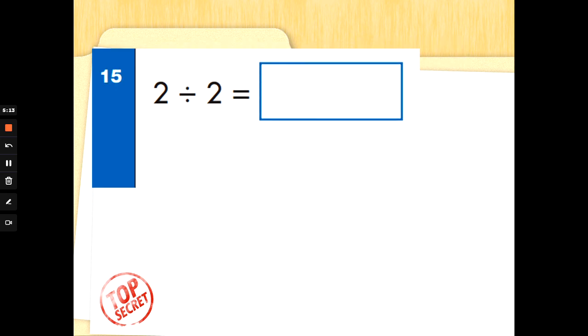Number 15. 2 divided by 2. This is your 2 times tables. How many 2s make the number 2? Get ready to count in 2s. 2. That didn't take long. 2 divided by 2 or half of 2 is 1. Great dividing. Well done.